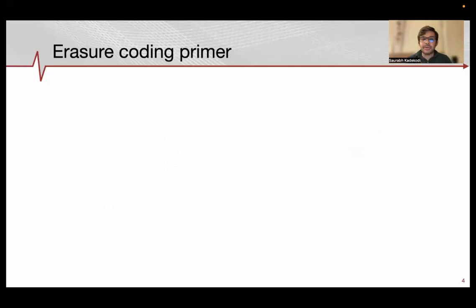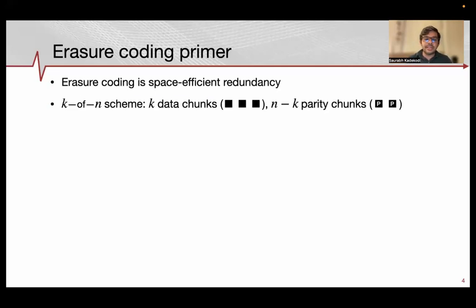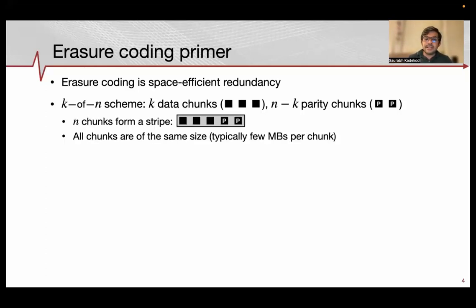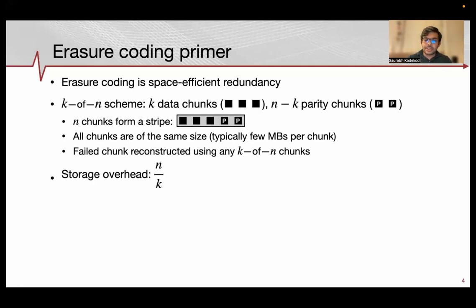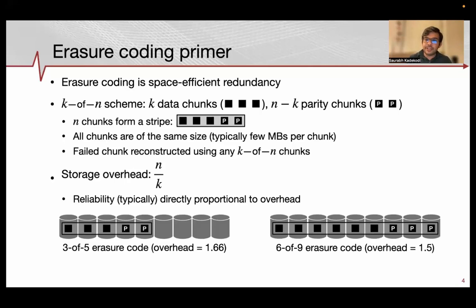Erasure coding is the more space-efficient redundancy alternative to replication. Denoted as a k-of-n scheme, it consists of k data chunks and n minus k parity chunks to form an n-chunk stripe. Whenever a disk or chunk fails, it is reconstructed using any k of the n chunks. The storage overhead is defined as n over k, and reliability is directly proportional to storage overhead. For example, a 3-of-5 scheme has overhead 1.66 and higher reliability than a 6-of-9 scheme with overhead 1.5.